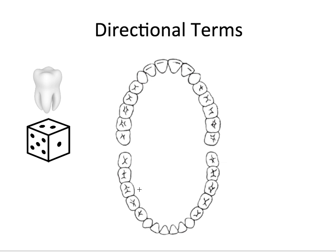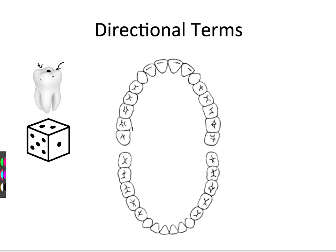Now let's talk about directional terms. It's helpful to think about a dice or cube that has six surfaces. A tooth is similar, except we don't count the bottom surface. So you can think of there being five surfaces that we want to consider when talking about the directional terms for a tooth.